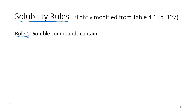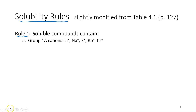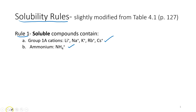The first rule is about what soluble compounds contain. They contain group 1A cations, the ammonium ion, and the nitrate anion.